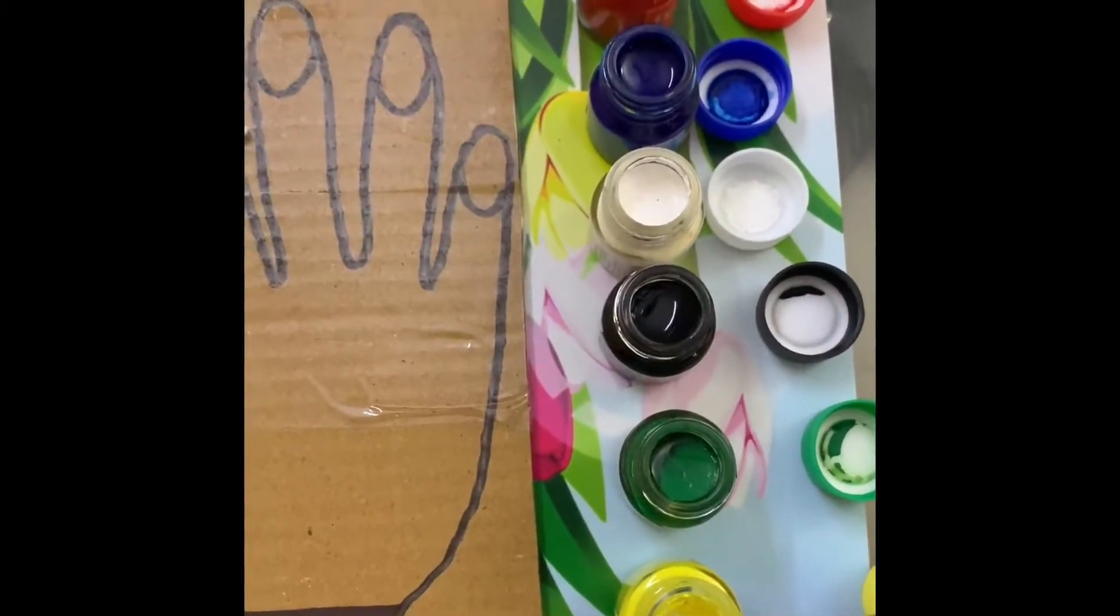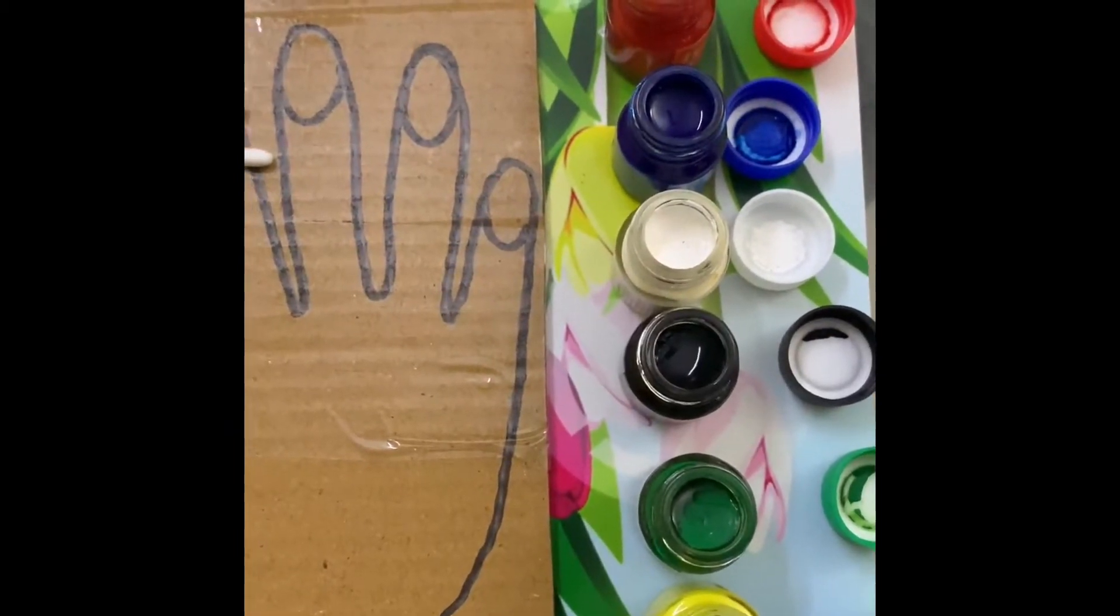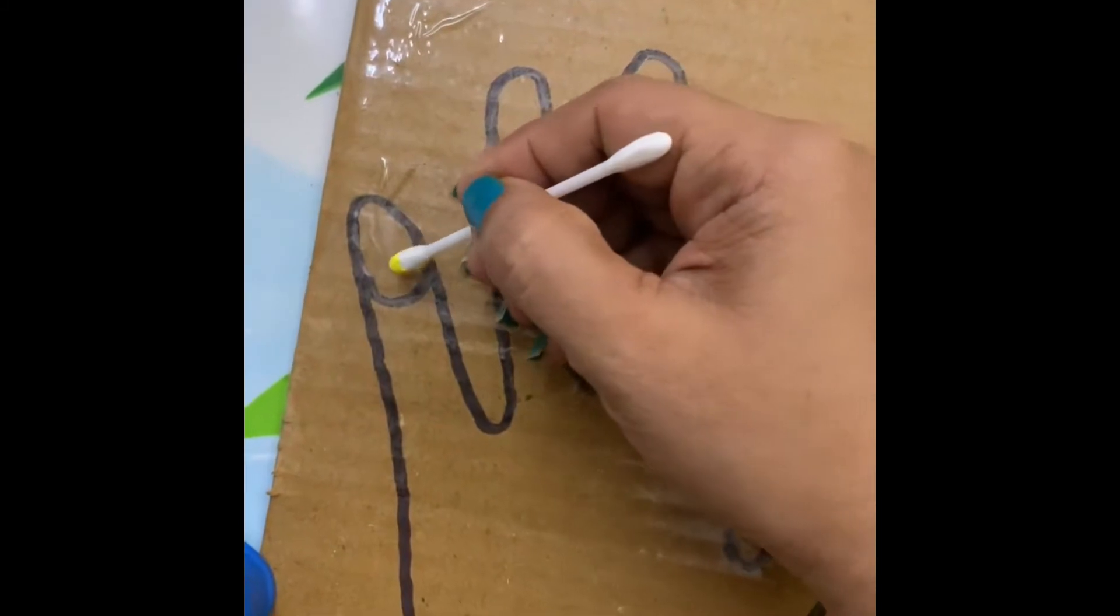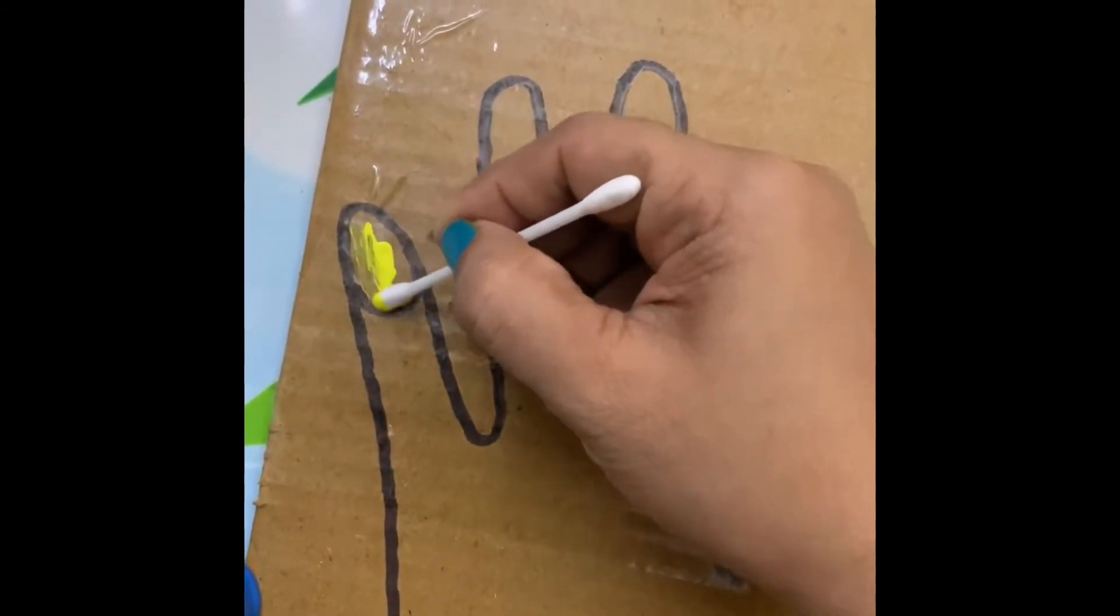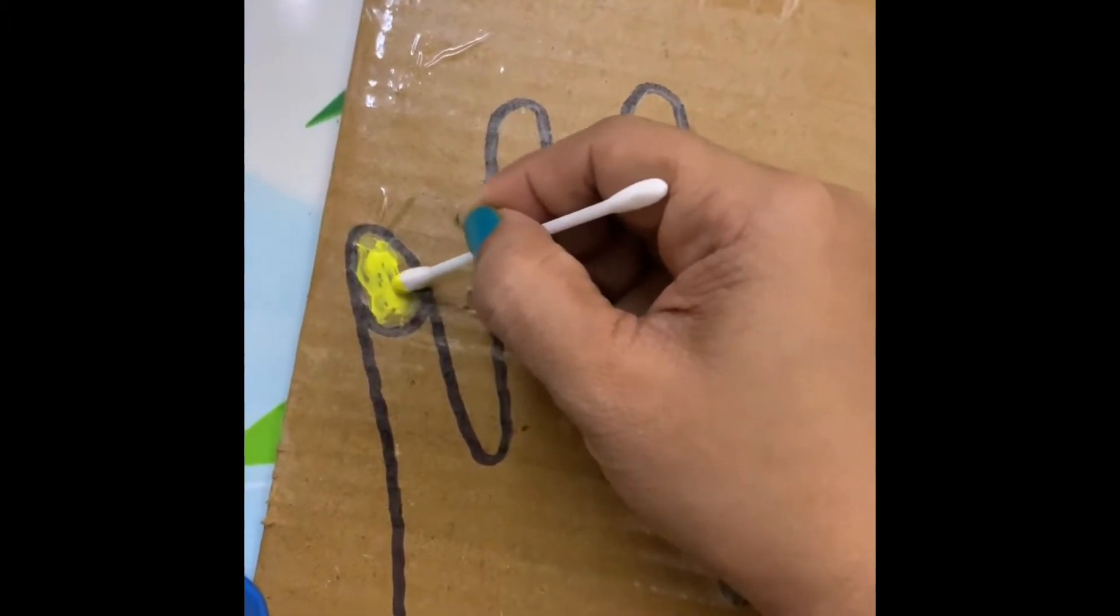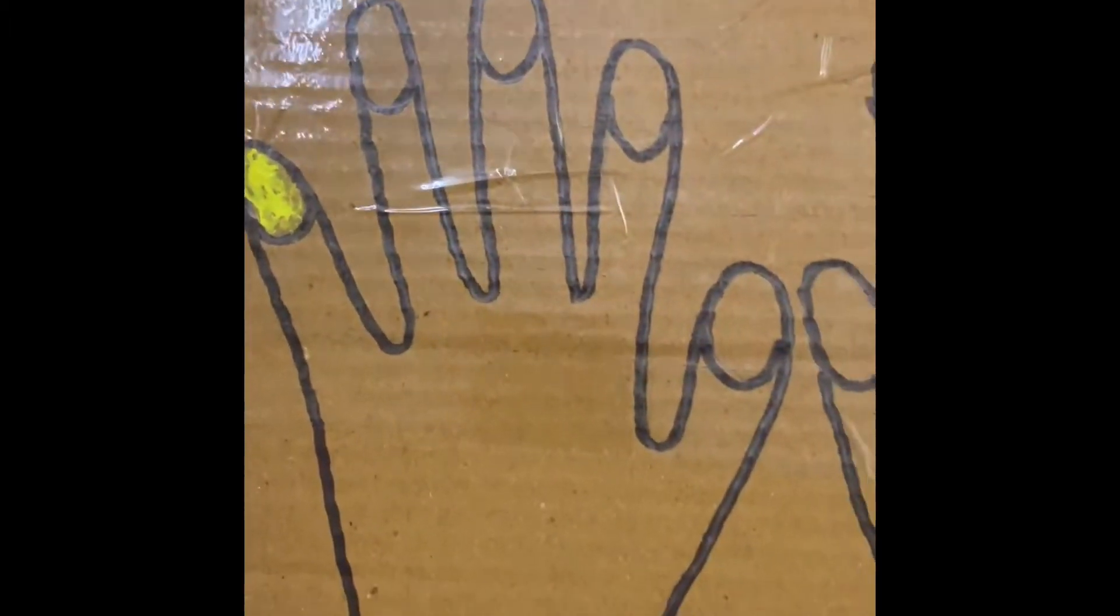So if I want to use yellow paint, I want to color yellow. So see how I am doing. See yellow paint, okay. So I am making this beautiful with the help of yellow color.